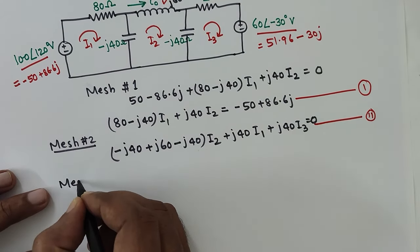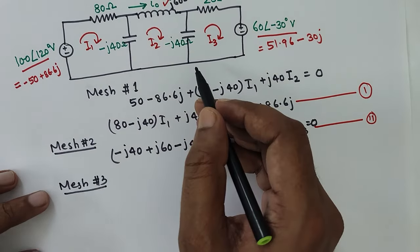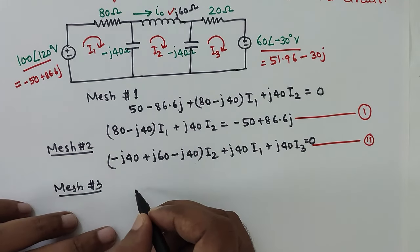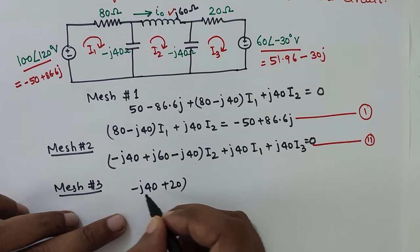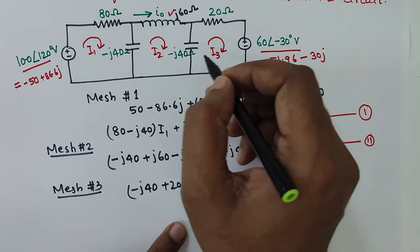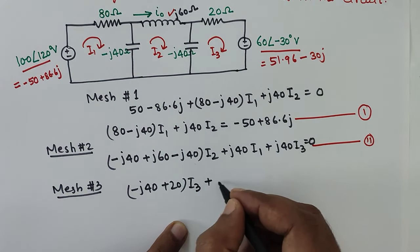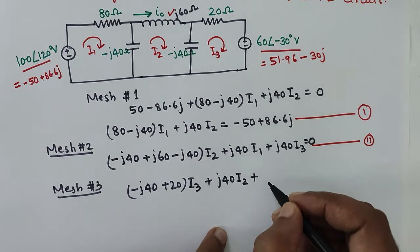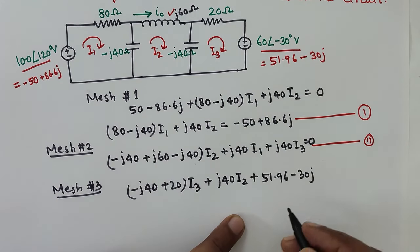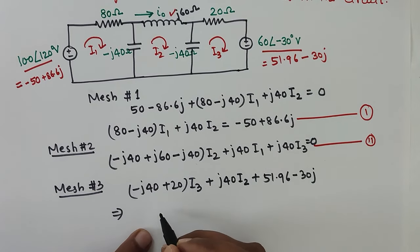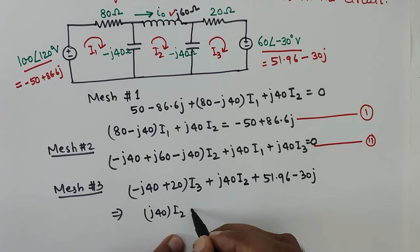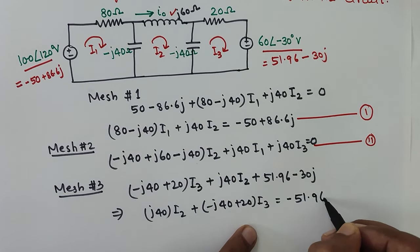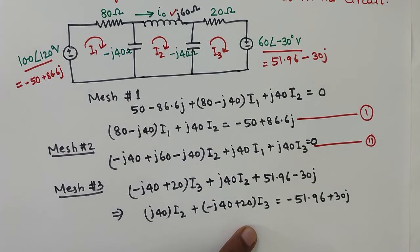From mesh 3, we can write (-j40 + j40 + 20 + j40) into I3. Then I2 is in the opposite direction, so +j40·I2, and finally +51.96 - 30j. Rearranging: j40·I2 + (20 - j40)·I3 = -51.96 + 30j. This becomes equation 3.